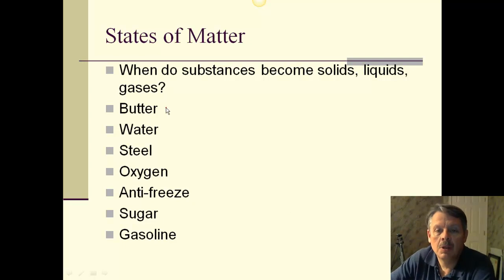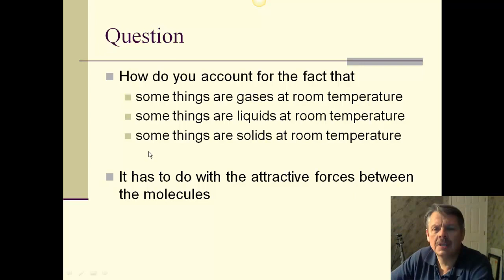For example, let me just look at the first couple. Butter will melt in your hand, which means it's a solid at room temperature, even if it is a soft solid, and it's a liquid at body temperature. Whereas look at water. Water is definitely a liquid at room temperature, and it's still a liquid when it's body temperature. Why is that? Water has already melted because it melted at 32 degrees Fahrenheit. So it melted at a much lower temperature than butter did. Why is that? And why is it that steel hasn't melted yet and won't melt for a long time? Well, how do you account for the fact that some things like oxygen, nitrogen, helium, neon, they're all gases at room temperature? Whereas some things like water and isopropyl alcohol and gasoline are liquids at room temperature, and some things like wood and steel and plastic are all solids at room temperature. Well, it has to do with the attractive forces between the molecules.